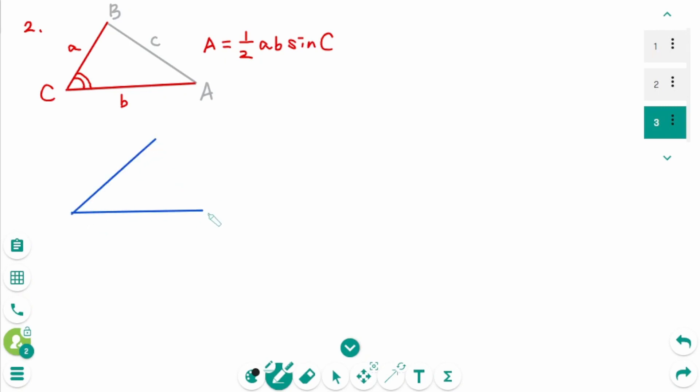There is a triangle, the side length is 8, 9 and 30 degrees. Then area equals 1 over 2 times 8 times 9 times sine 30 degrees.